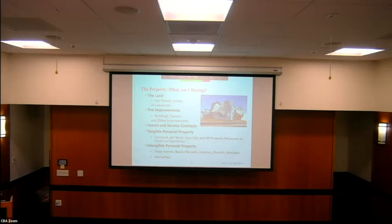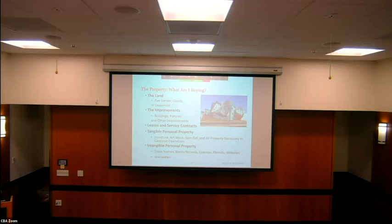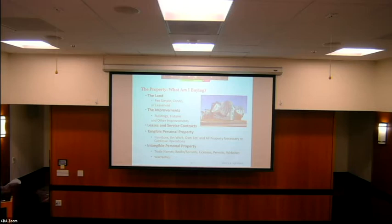Warranties — if you buy a property with a roof that has a warranty, you want to be able to sue the person who built it if something goes wrong, so all those warranties transfer over. You also take on the obligations of the property — zoning requirements, for example. You may buy a property used for multifamily and can't just turn it into an office. And easements — just because you didn't know about an easement, if it's recorded on title, people still have rights to use your property.